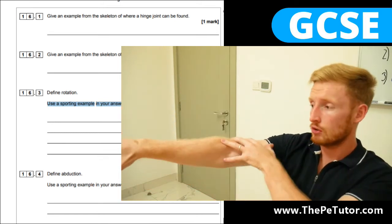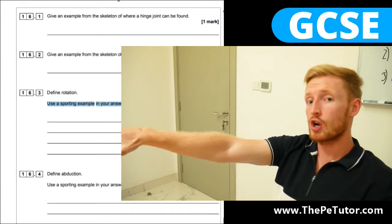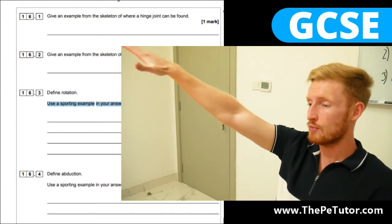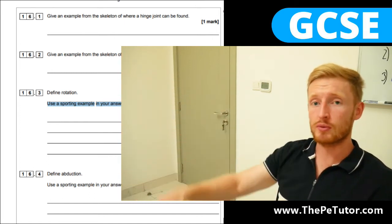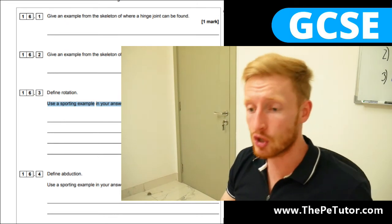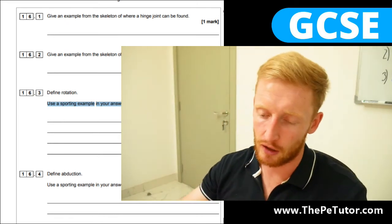Now, rotation is on that single axis. Circumduction, on the other hand, is actually moving in all three different planes. It's moving across different axes through different planes in order to generate that movement. So it's a combination of flexion, extension, abduction, and adduction.